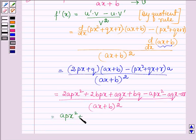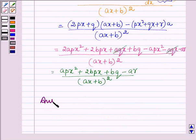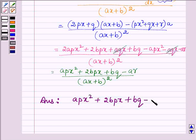Then we have plus 2BPx, then plus AQx cancels out with minus AQx, then we have plus BQ and minus AR. And in the denominator we have Ax plus B whole squared. Thus, on differentiating the given function, our answer is APx squared plus 2BPx plus BQ minus AR upon Ax plus B whole squared.